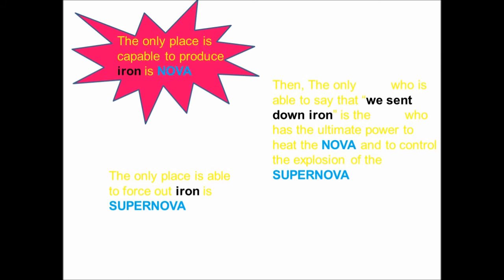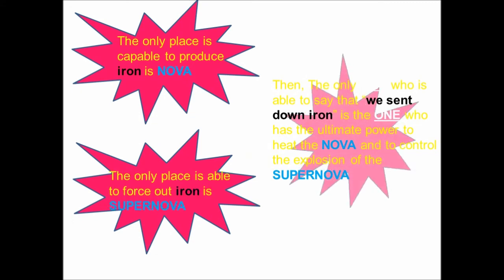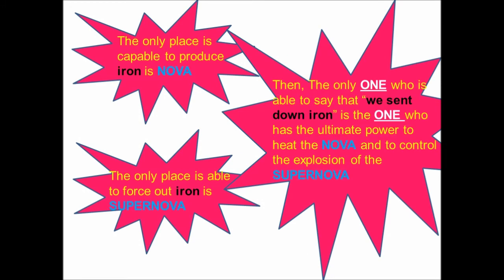The only place capable of producing iron is nova. The only place able to force out iron is supernova. Then, the only one who is able to say that we sent down iron is the one who has the ultimate power to heat the nova and to control the explosion of the supernova.